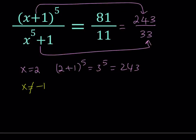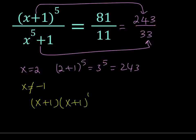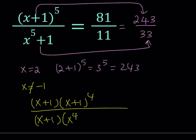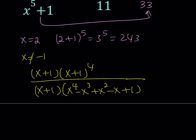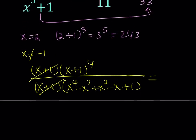So let's go ahead and factor the top and the bottom. That gives me x plus 1 multiplied by x plus 1 to the 4th power on top. For the bottom, if I take out an x plus 1 — remember factoring a^n plus b^n when n is odd — it goes: x to the 4th minus x cubed plus x squared minus x plus 1, with alternating signs because the first factor is positive. So these two x plus 1 factors cancel out, leaving us with the equation equal to 81 over 11 in simplest form.